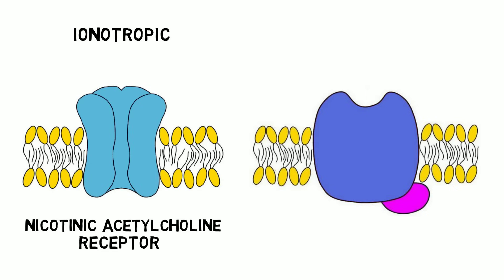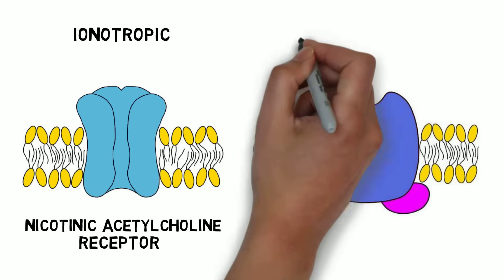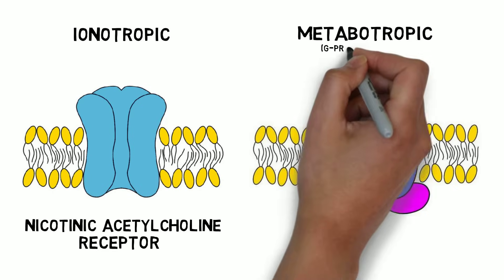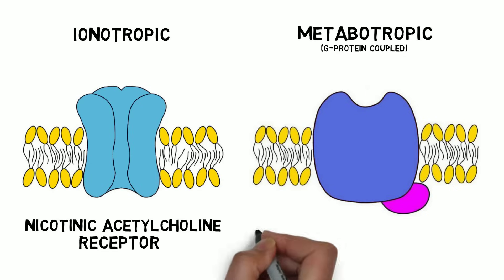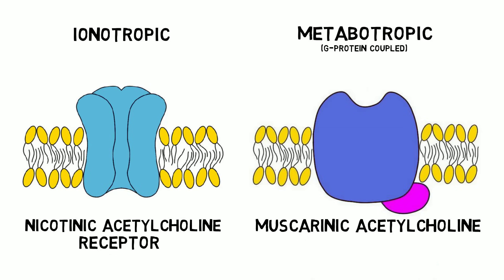Another family is metabotropic. These are called muscarinic acetylcholine receptors because a substance called muscarin binds to them. Their effects depend on the subtype of the receptor.